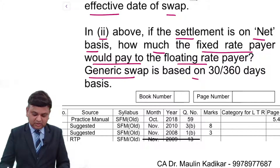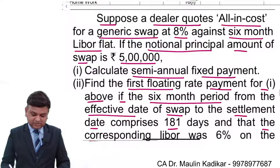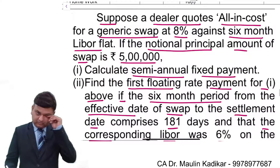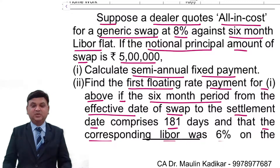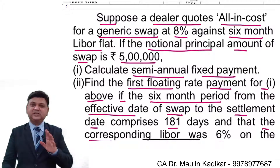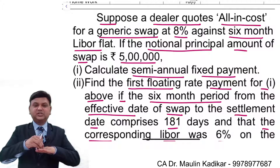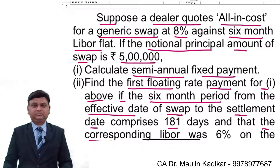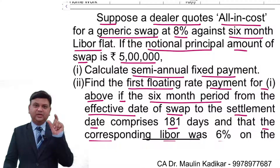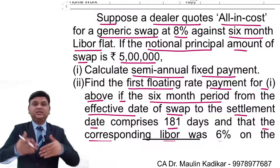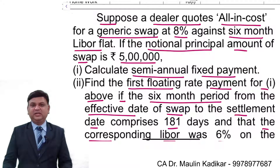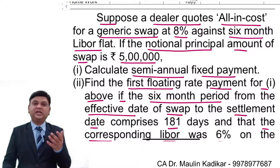A generic swap is based on a 30/360 days basis. The word 'generic' stands for simple — there are no other terms and conditions. It is also given the name 'pure vanilla swap.'